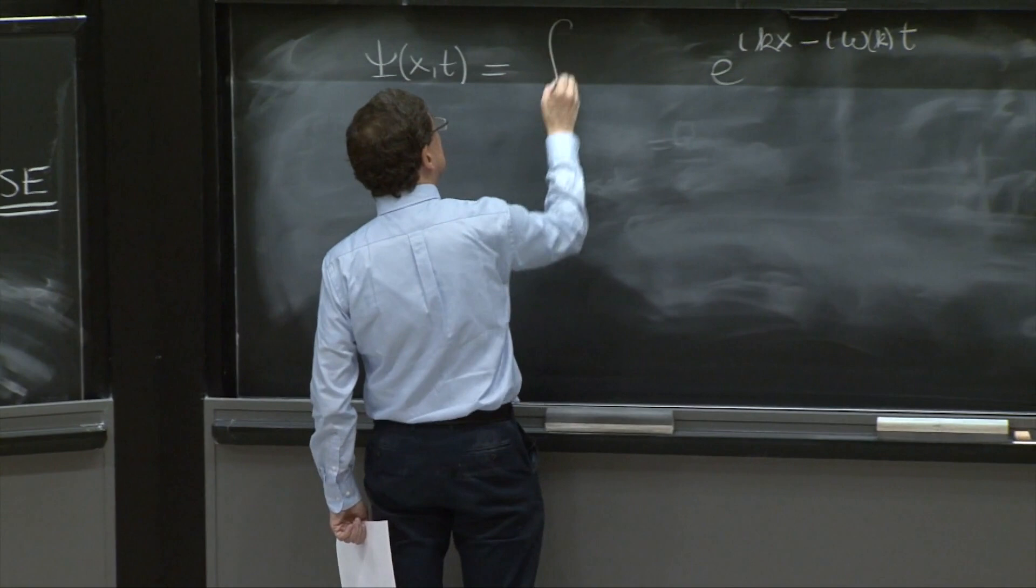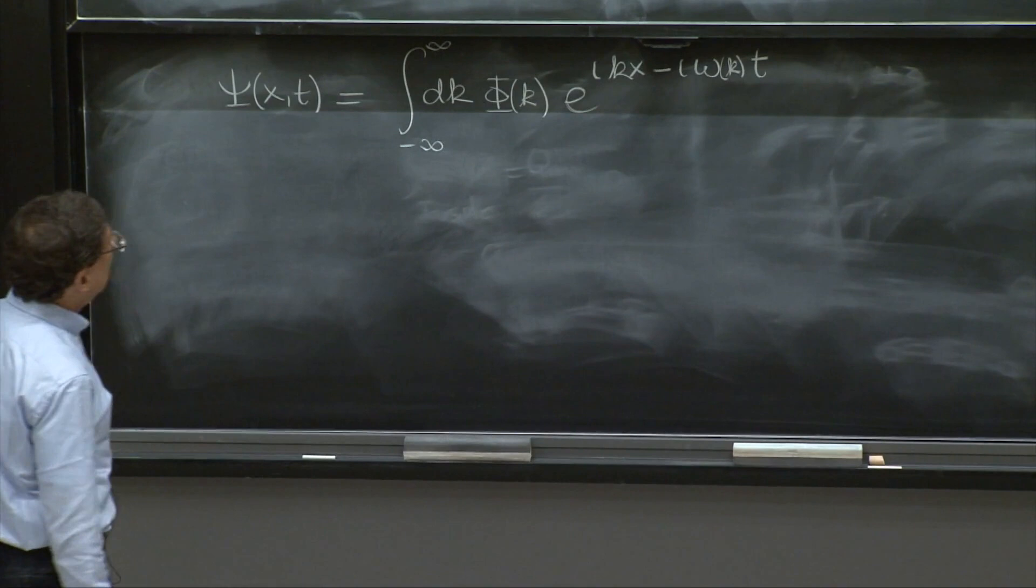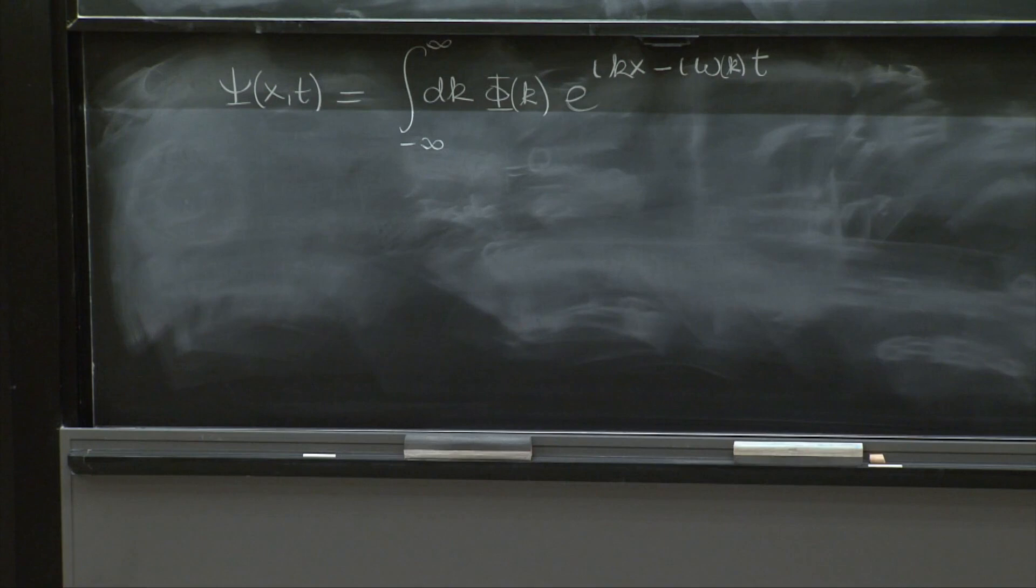And therefore, we'll write dk, maybe from minus infinity to infinity, and we'll put a phi of k, which could be anything that's not part of the differential equation.